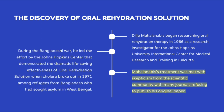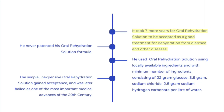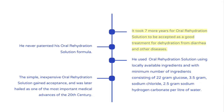Mahalanabis' treatment was met with skepticism from the scientific community, with many journals refusing to publish his original paper. It took 7 more years for oral rehydration solution to be accepted as a good treatment for dehydration from diarrhea and other diseases. He never patented his oral rehydration solution formula.